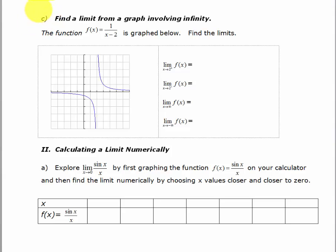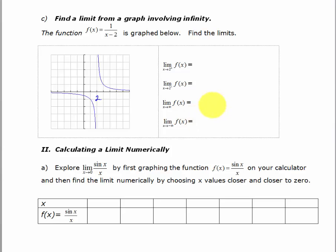Let's look at part C, where we're finding a limit from a graph that involves infinity. We've got the graph of f(x) = 1/(x−2). That's the graph of 1/x shifted to the right two units. We have a vertical asymptote at x = 2. Pause the video and give it a try — see if you can evaluate these limits on your own, then start the video up again.